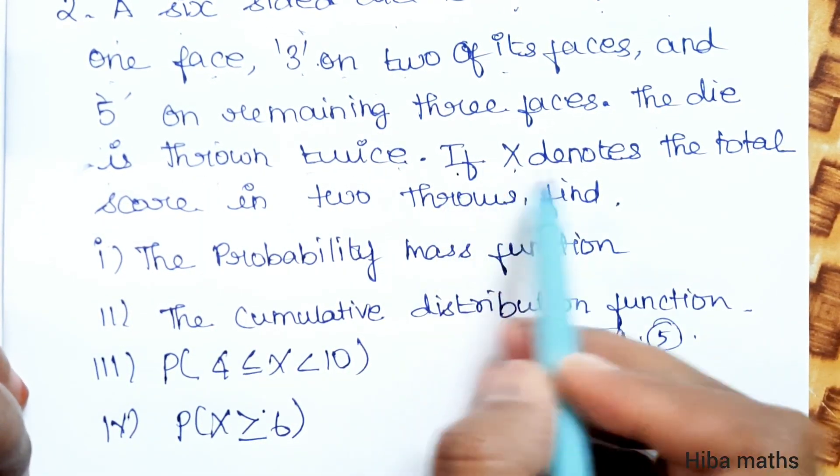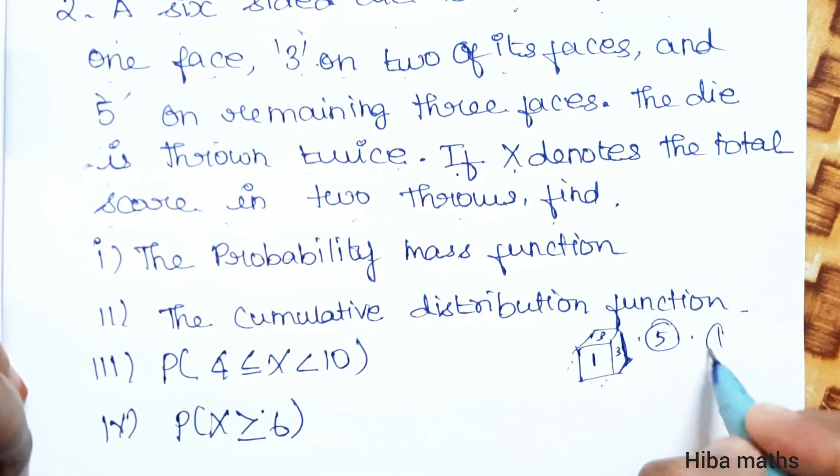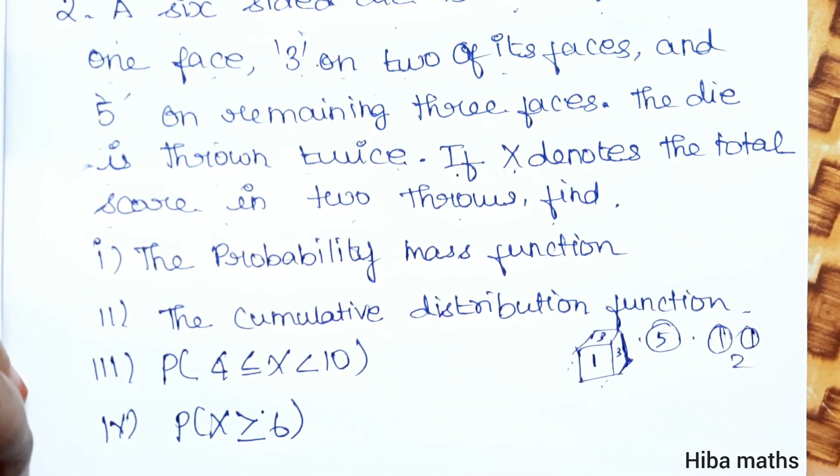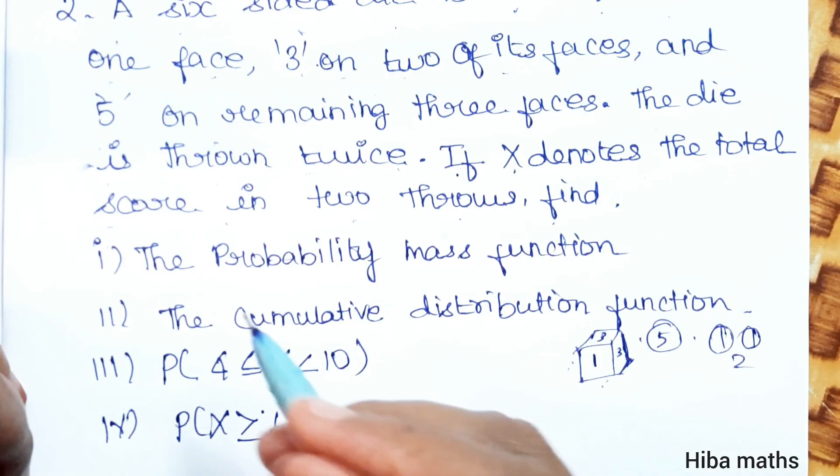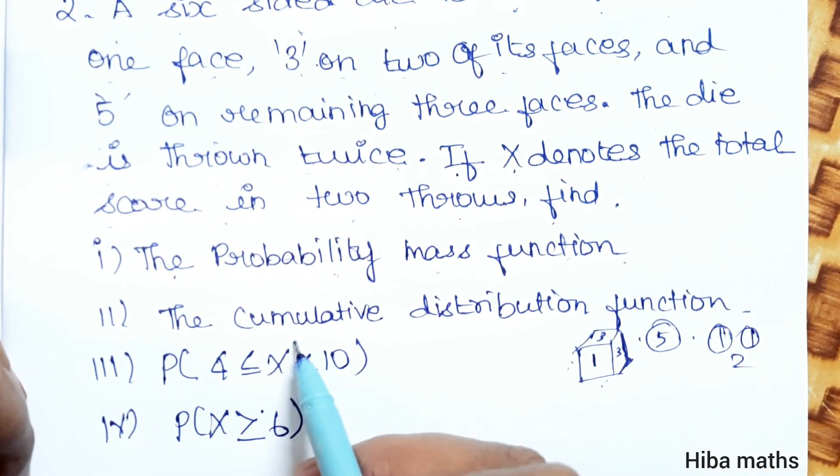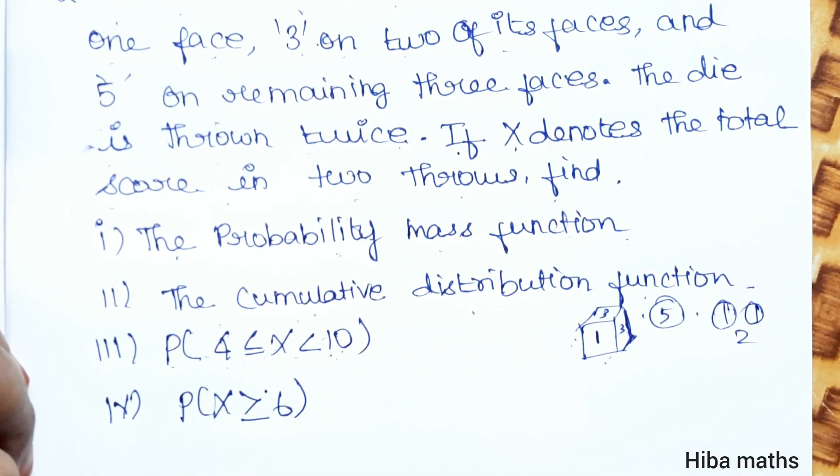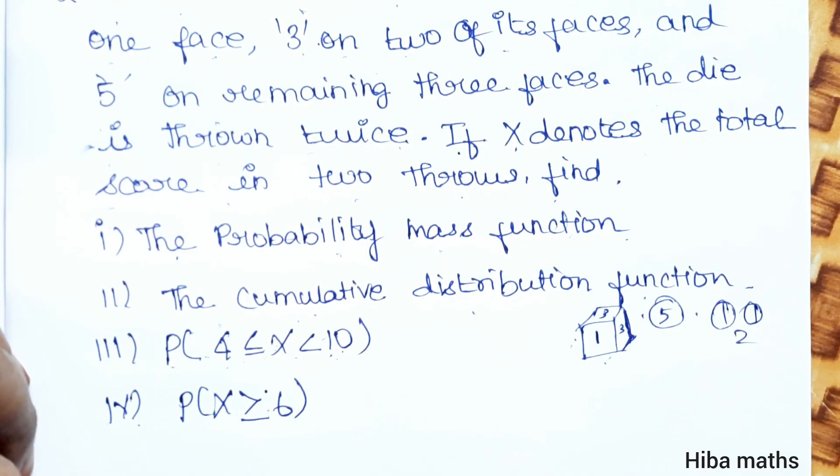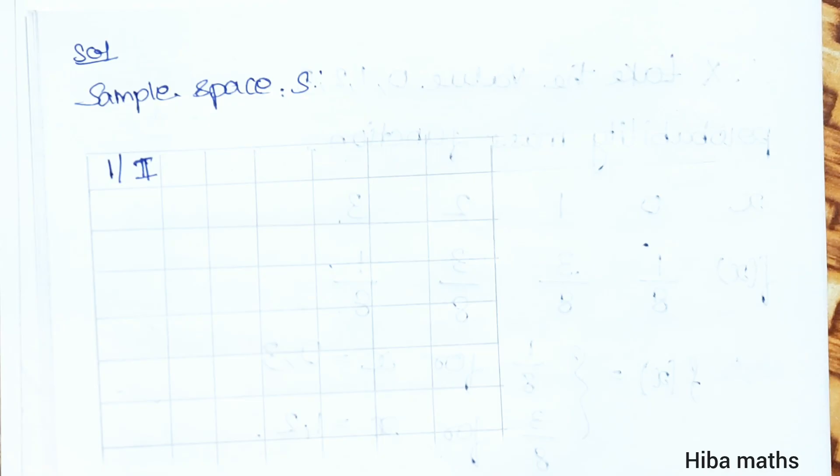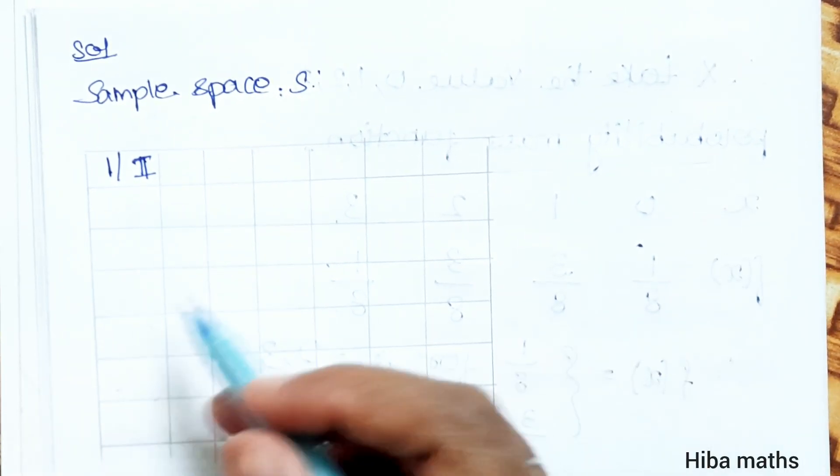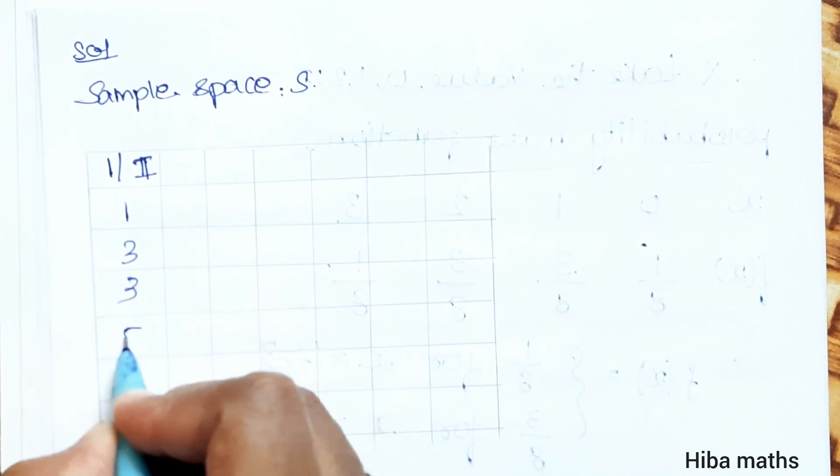If X denotes the total score in two throws, so first throw is one, add two. In this case, X will be the sum of two throws. Now we have to find: the probability mass function, the cumulative distribution function, and P of X greater than or equal to 4 and less than 10. This means four is included, ten is not included.